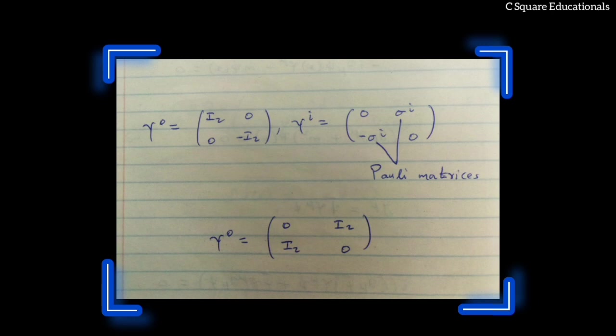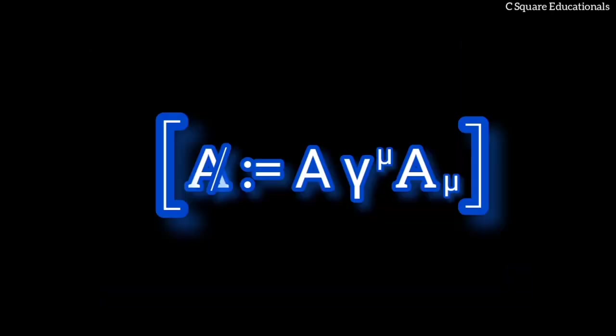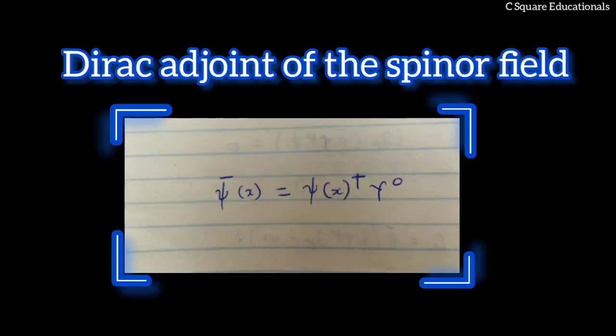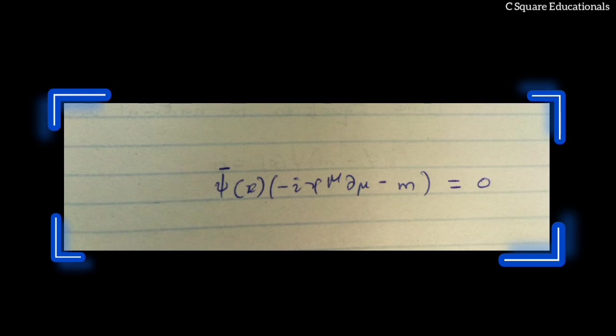The slash notation is a compact notation for A slash equivalent to gamma mu A mu, where A is a four-vector, or when it is a four-vector differential operator, partial mu. The summation over the index mu is implied. The Dirac adjoint of the spinor field psi(x) is defined using the property of the gamma matrices, which follows straightforwardly from hermiticity properties of the gamma mu. One can derive the adjoint Dirac equation by taking the Hermitian conjugate of the Dirac equation and multiplying on the right by gamma 0.